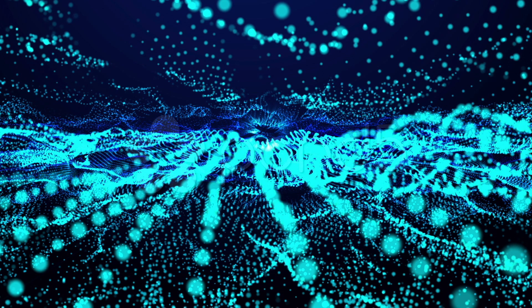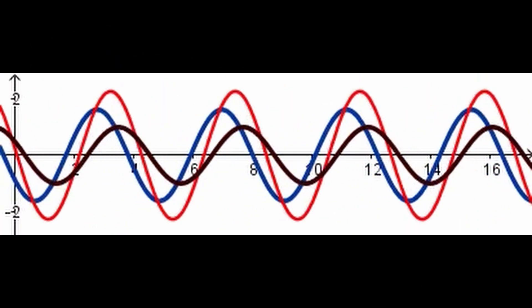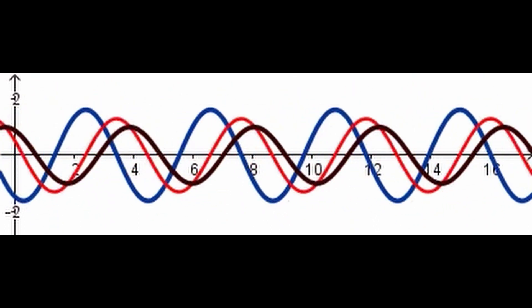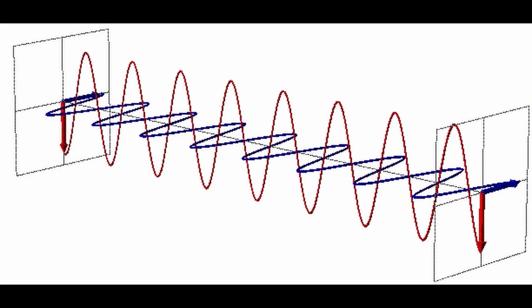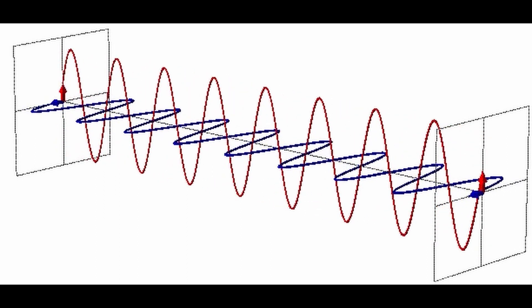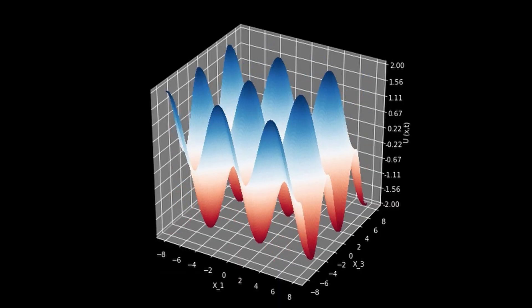In quantum mechanics, the wave function is a mathematical function that describes the behavior of a particle or system of particles. The amplitude of the wave function, represented by the Greek letter psi, provides information about the probability of finding the particle in a particular state. Specifically, the square of the magnitude of the amplitude gives the probability density of finding a particle in a particular location in space. The amplitude is a complex number, meaning it has both a magnitude and a phase. The magnitude determines the probability density of finding the particle at a given location, while the phase determines the interference effects that occur when two or more wave functions interact.